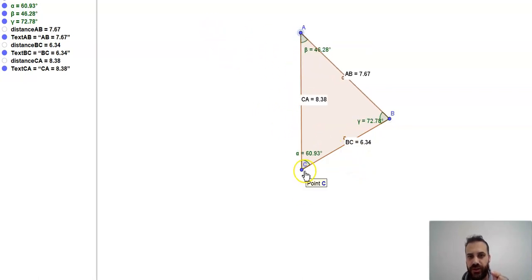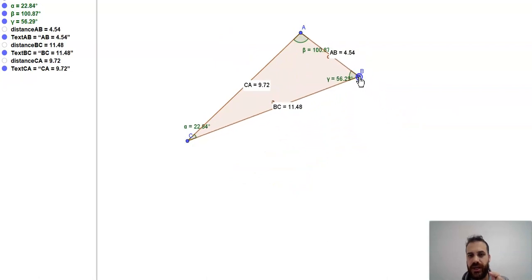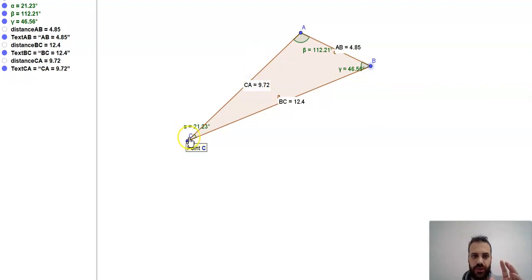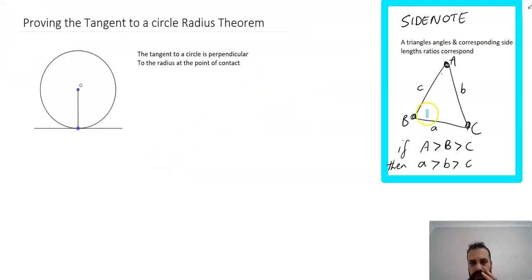It doesn't matter how we move the triangle. The relationship holds: the largest angle has the longest opposite side, the middle angle has the middle side, and the smallest angle has the shortest side. In brief, if we have a triangle with angles A > B > C, then the corresponding sides satisfy a > b > c. We'll use this in the proof.